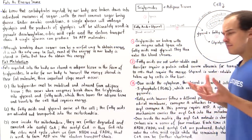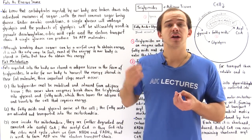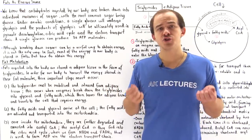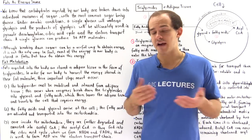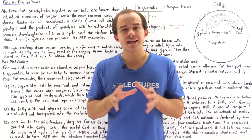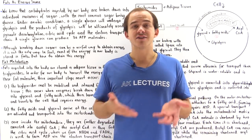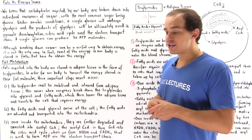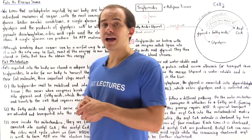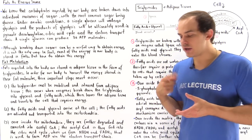Glucose is not the only molecule from which we can obtain energy. Another very common type of molecule from which we can obtain energy is fats. In fact, the majority of the energy stored in the human body is stored in fat, in special fat molecules known as triglycerides. Triglycerides are basically three fatty acids attached to a single glycerol backbone — composed of three fatty acids and one glycerol.